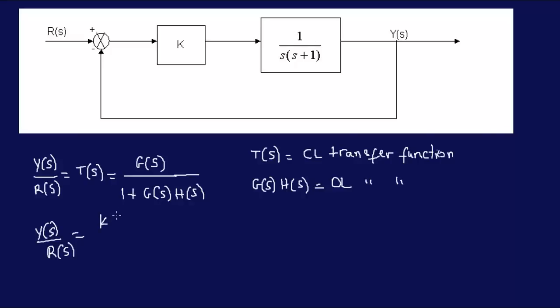So, this would be one over S, S plus one, over one plus G of S, H of S. That's the return path. This is G of S. And the return path here is unity equal to one. But there are some problems where we have a function over here. In that case, we would have to multiply that by G of S.